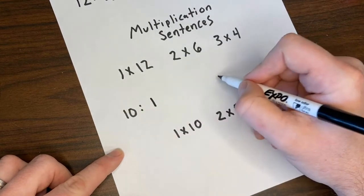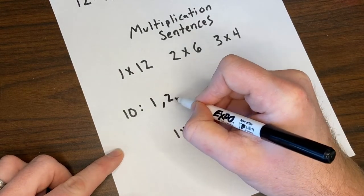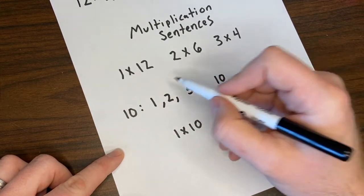3 doesn't work, 4 doesn't work. So I list my factors, 1 and 10, 2 and 5, again these are least to greatest.